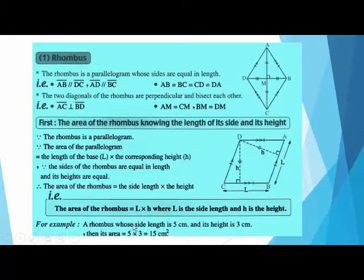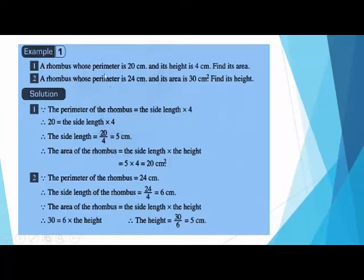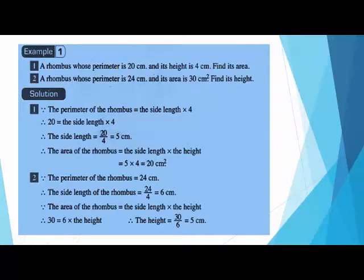For example, a rhombus whose side length is 5 and its height is 3. So the area equals 5 times 3 equals 15 centimeters squared. For another example, a rhombus whose perimeter is 20 and its height is 4 — find its area. The perimeter of a rhombus equals side length times 4, so 20 divided by 4 equals 5. The side length is 5. Now the area equals 5 times 4 equals 20.